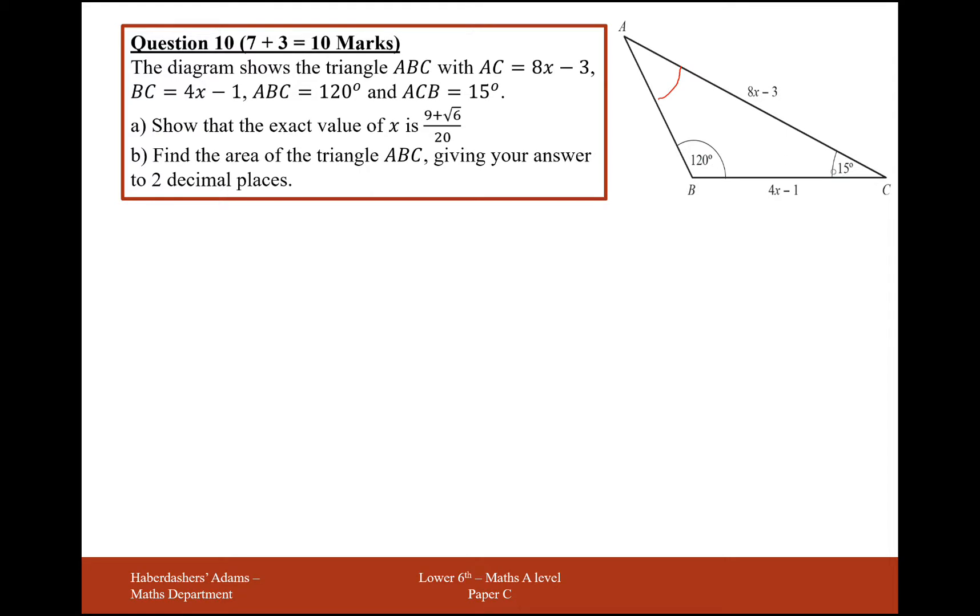So 180 minus 135, that makes it a 45 degree angle up here. So now we've got two pairs of opposite sides and angles, so sine rule.